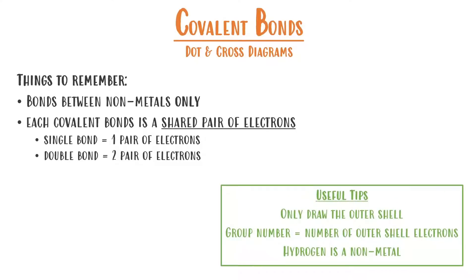Here are a few helpful tips. We only need to draw the outermost shell of our atom and we can find this out by looking at the group number. For example, carbon is in group four, so it has four outer electrons. Oxygen is group six, so six outer electrons. And one final thing — even though hydrogen is sometimes found on the top or the left hand side of the periodic table, it counts as a non-metal.